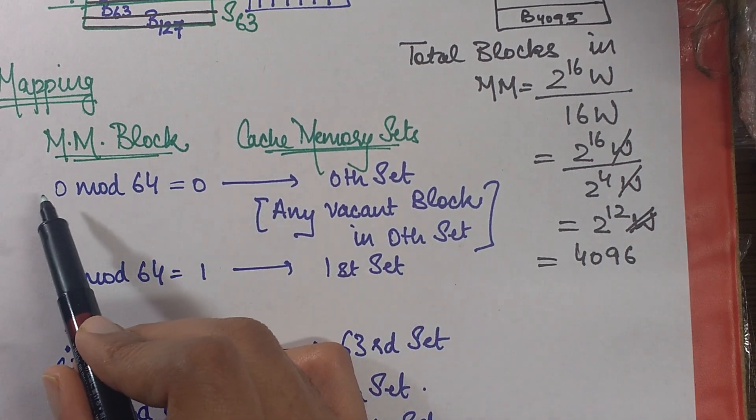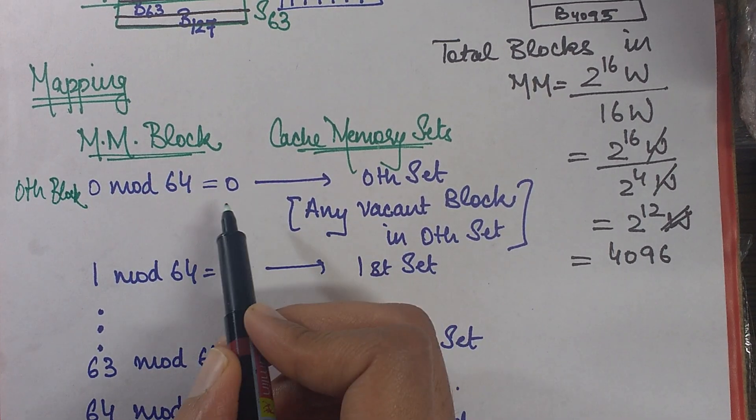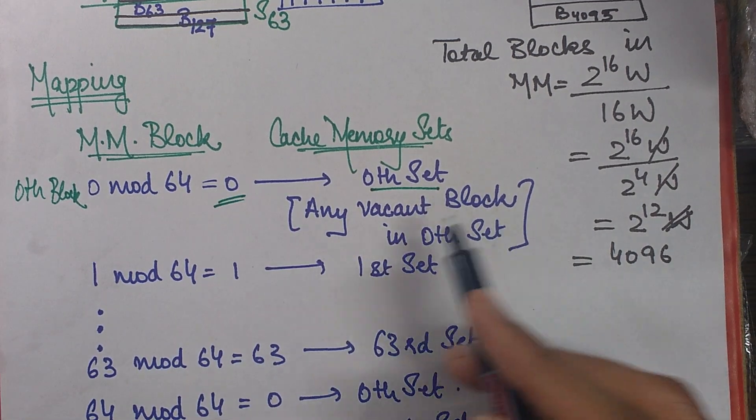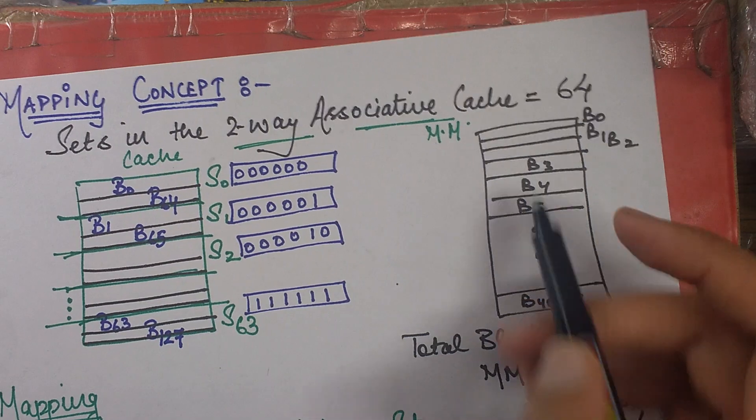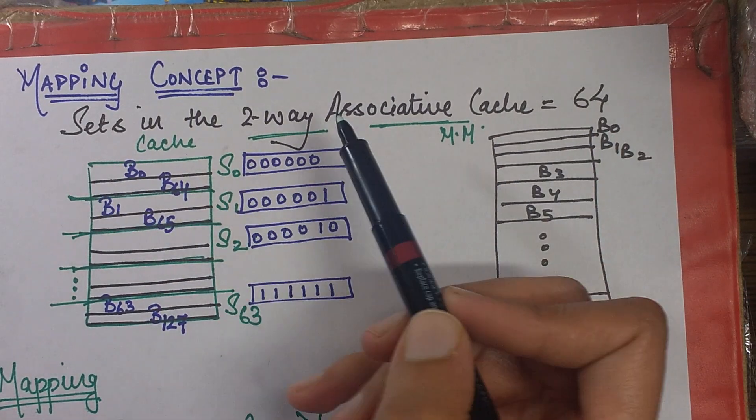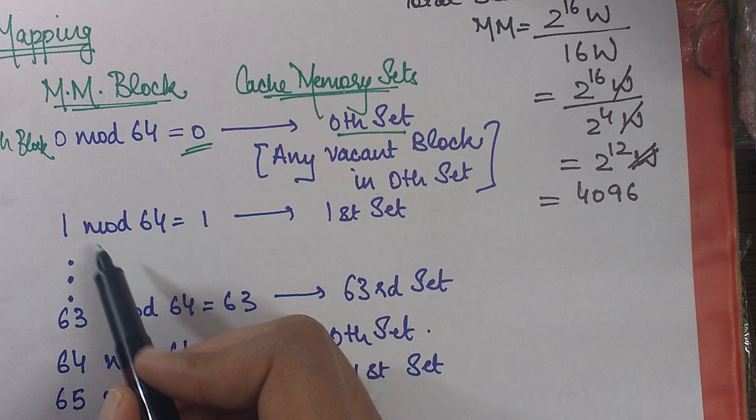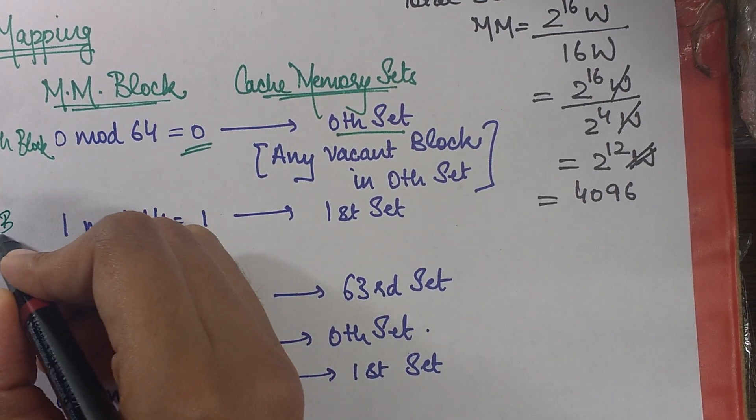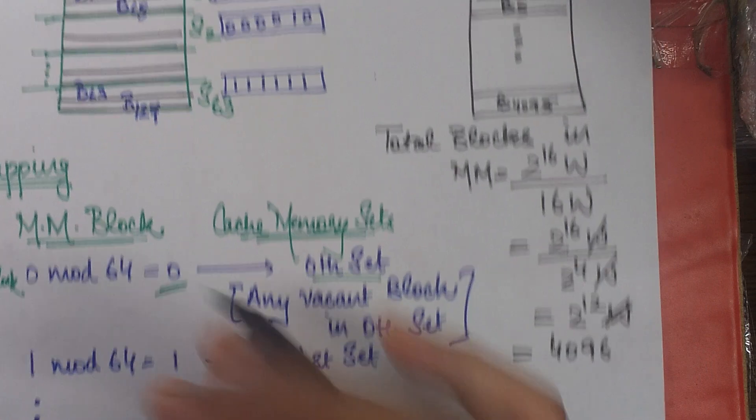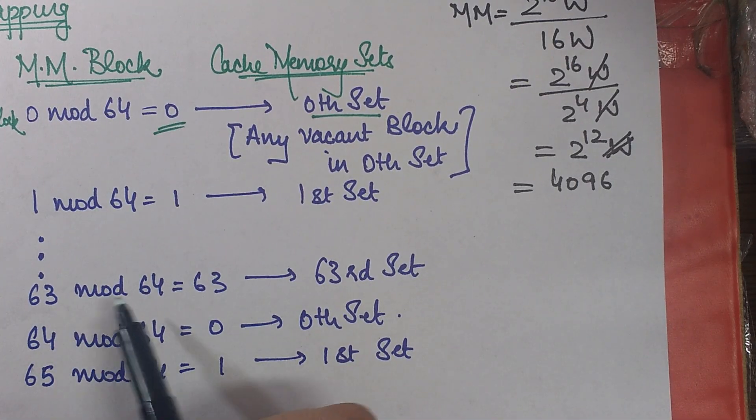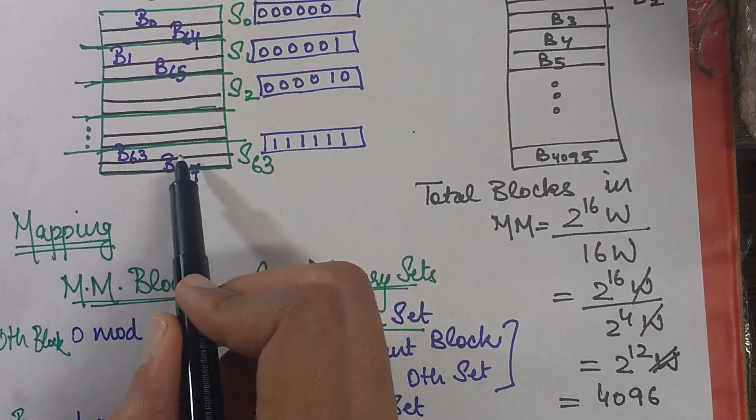So now let's perform the mapping. So for the 0th block of main memory, you'll write it as 0 mod 64, which will give you 0. Now this 0 represents the 0th set. So any vacant block in the 0th set can be written as this. So that means I'll put on my B0 block of main memory in the vacant space available. So then you compute 1 mod 64 for your first B1 block. Then this is mapped to 1, which is first set. So you place it over here, B1. Then you keep on moving like that and you eventually get 63 mod 64 for your B63, which is mapped to 63rd set.